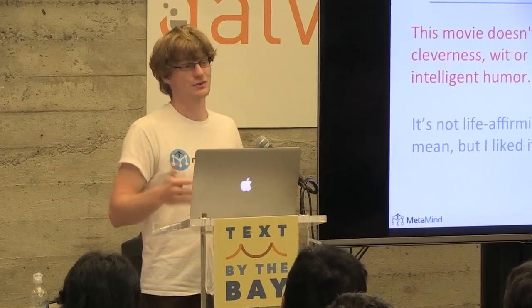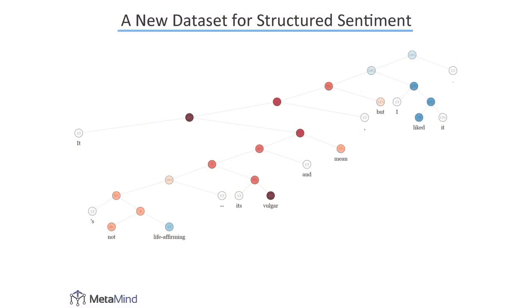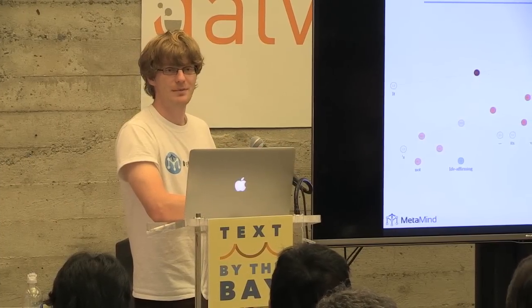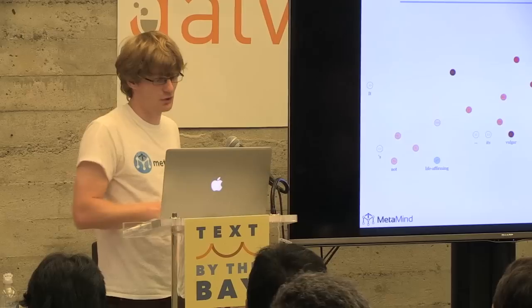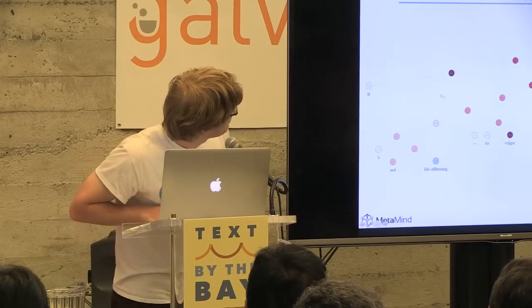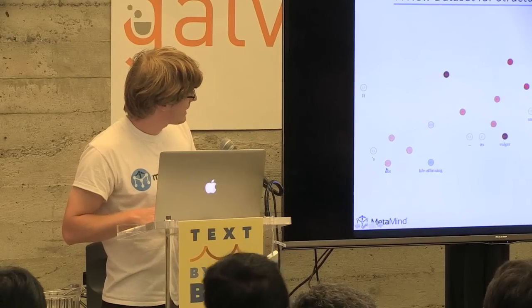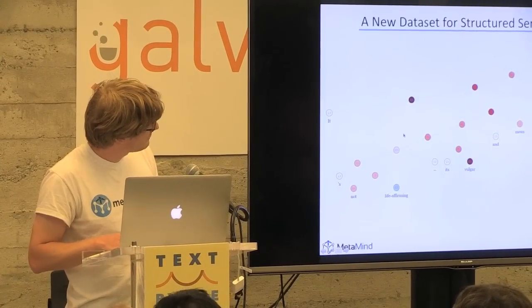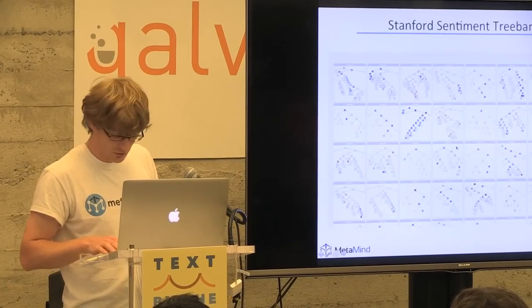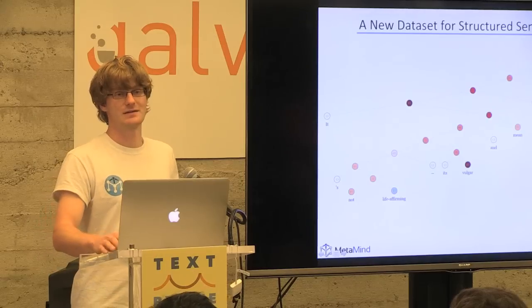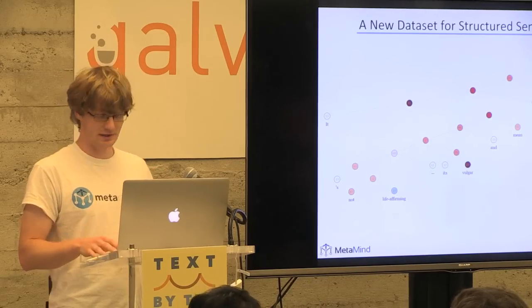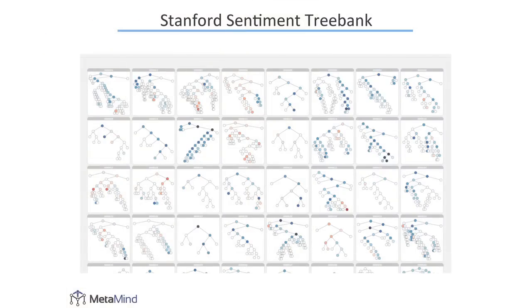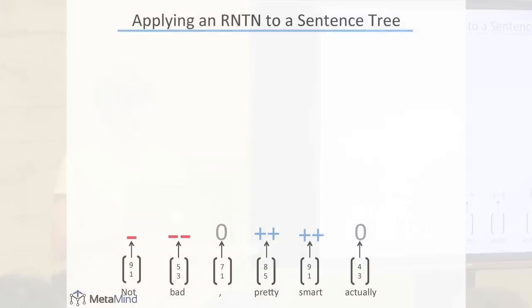Basically you want to find clever ways to collect deep learning data from various sources, or use Amazon Mechanical Turk or CrowdFlower to add more annotation. We collected labels for all syntactically plausible phrases — 'life affirming' is positive, 'not life affirming' becomes negative, 'vulgar' is negative, and adding 'but I liked it' relativizes the overall sentiment. Nowadays you can collect hundreds of thousands of labels for English in a day or two thanks to Amazon Mechanical Turk and similar platforms.